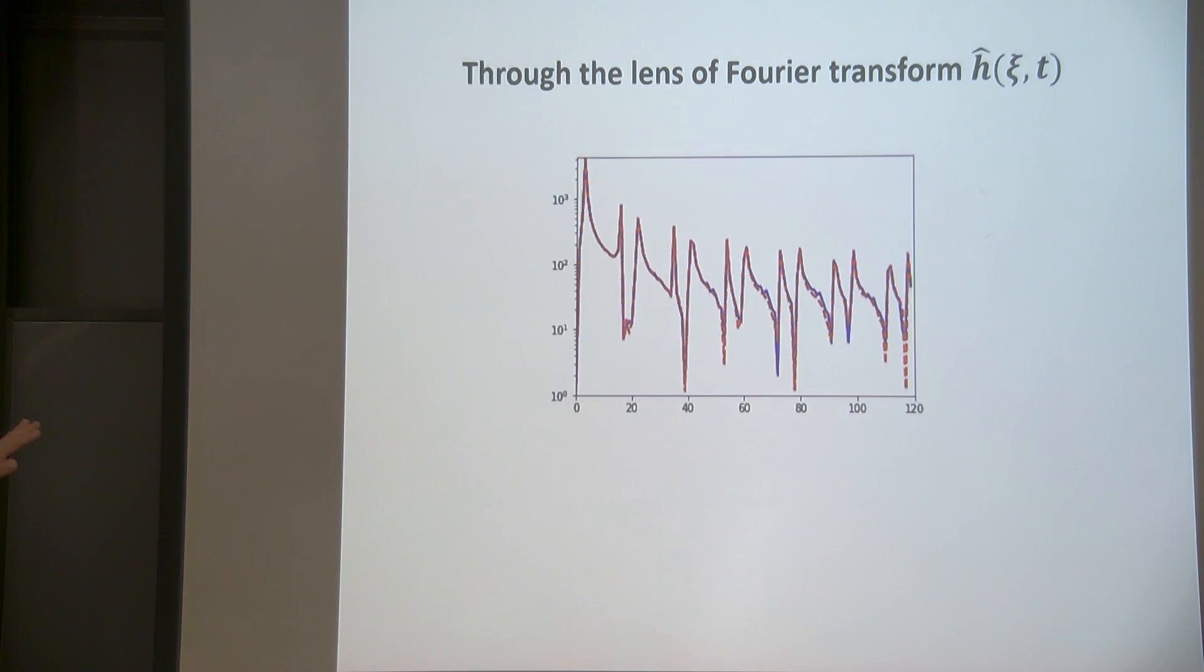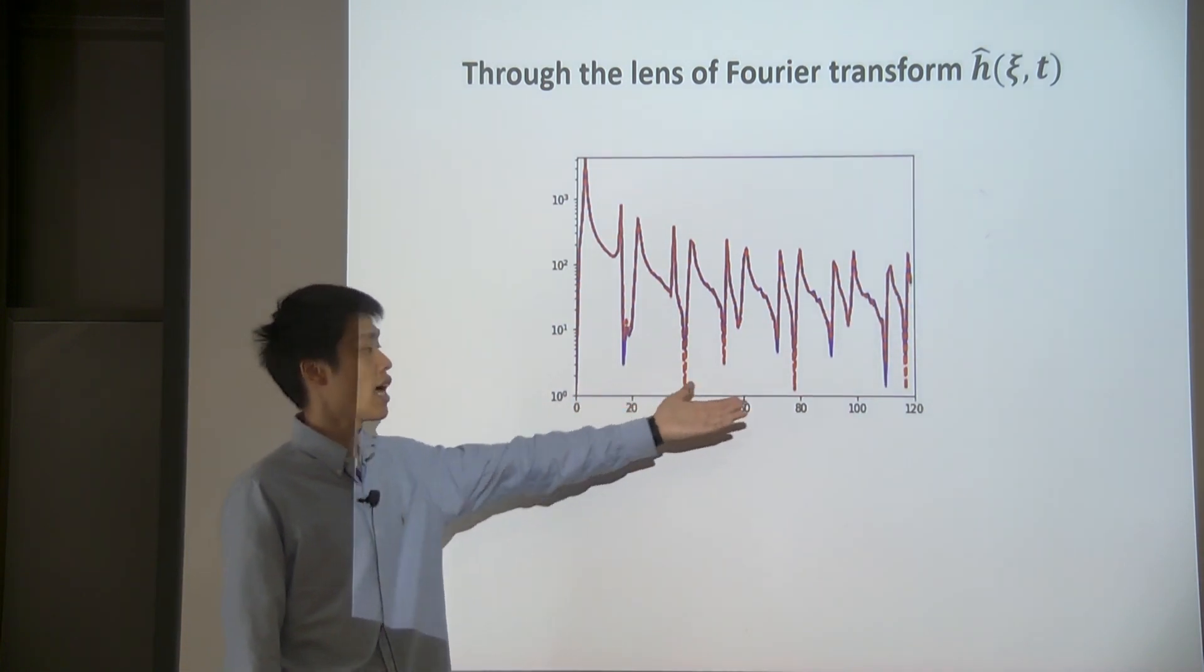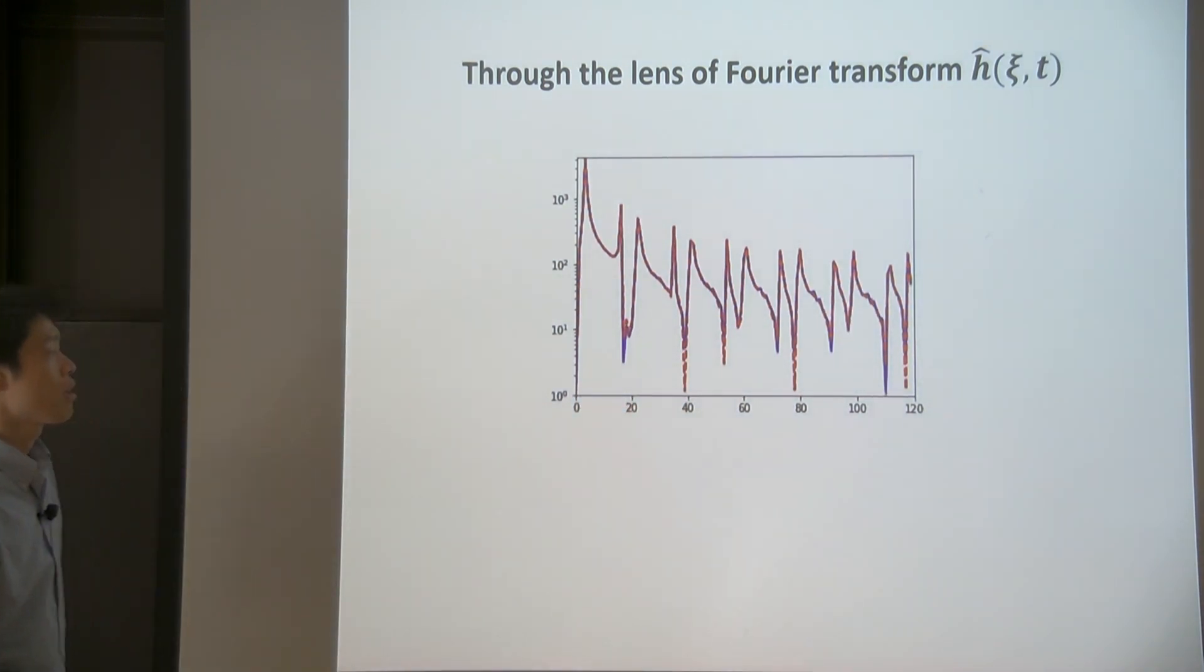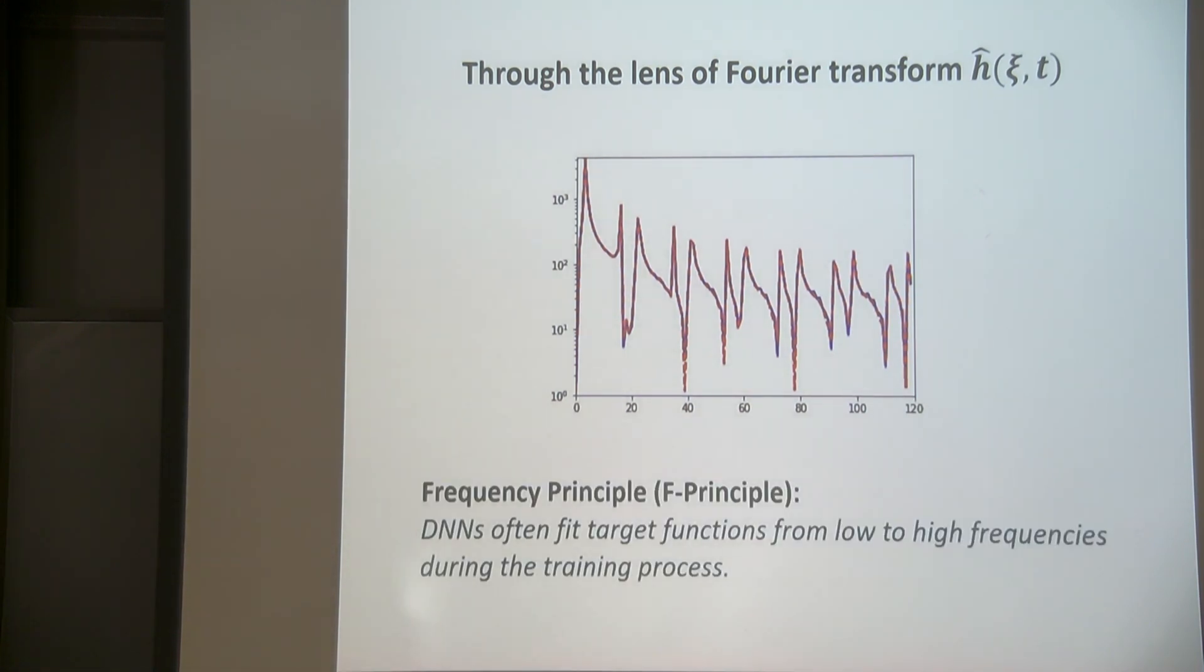So, okay. Let's look at the same trajectory, but now, through the lens of Fourier transform. Please pay attention to these frequency peaks and when these peaks are captured. Okay, from this picture, it seems that there's a very clear order of convergence. So the lower frequency ones first converge, and later, the high frequencies. So, essentially, this kind of phenomenon is general or universal for deep neural networks. And we call this phenomenon frequency principle. Essentially, DNNs often fit target functions from low to high frequencies during the training process.